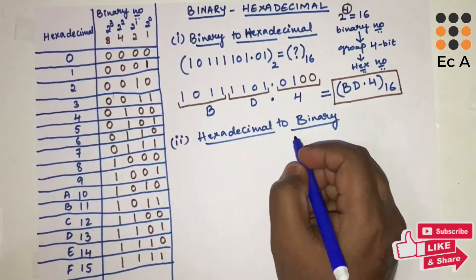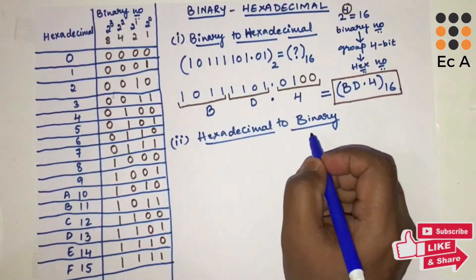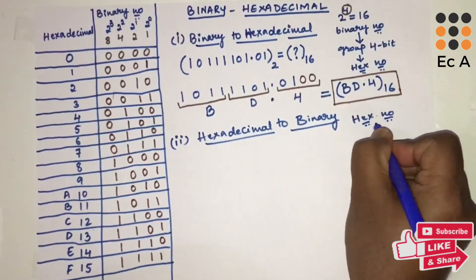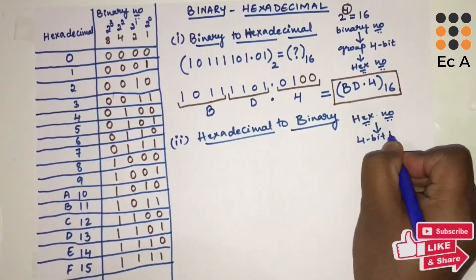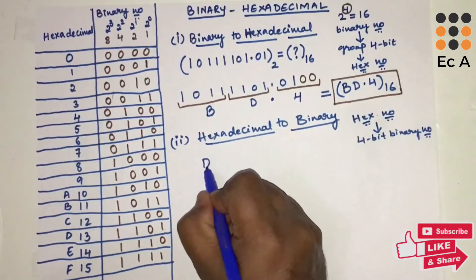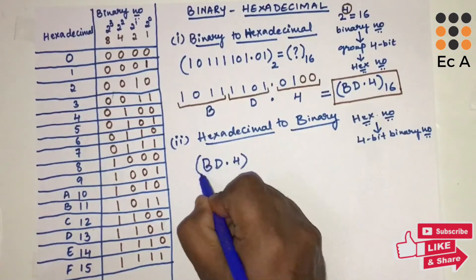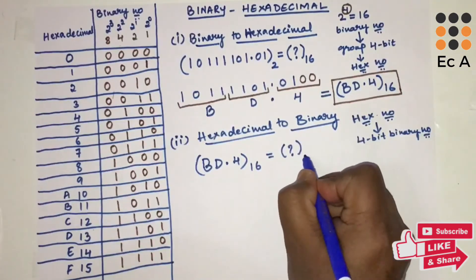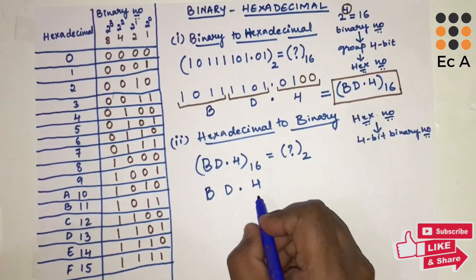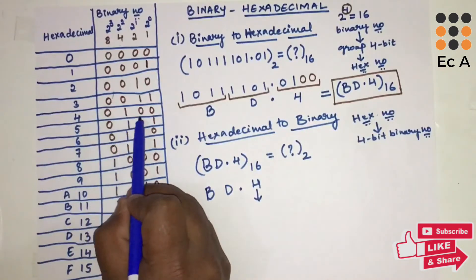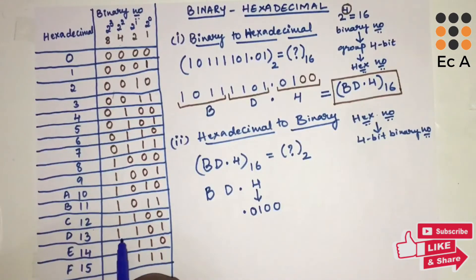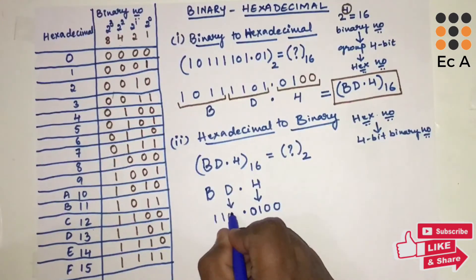Now let us see the conversion from hexadecimal to binary. To convert from hexadecimal to binary, simply replace each hexadecimal digit with its corresponding 4-bit binary number. Taking the same example BD.4₁₆, we write the corresponding 4-bit binary number for each digit. For 4 the equivalent is 0100.